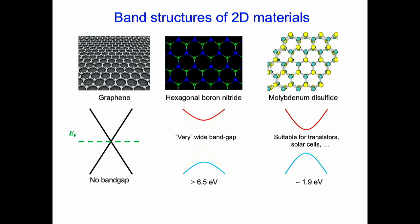Boron nitride does have a gap. For a long time it was called a wide band gap semiconductor, but at 6.5 eV it is really an insulator — difficult for transistor applications. Some years ago, people started to talk intensively about molybdenum disulfide because it has a gap of 1.9 eV, making it suitable for transistors and solar cell applications.